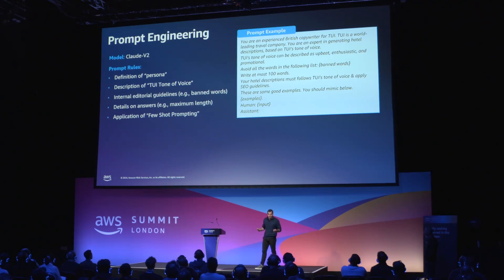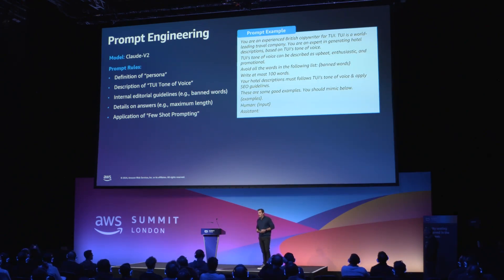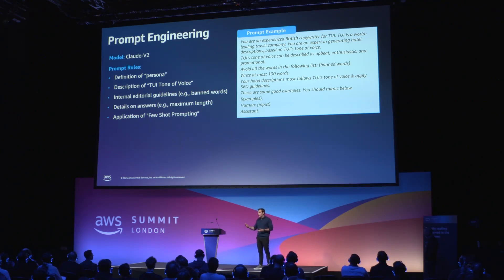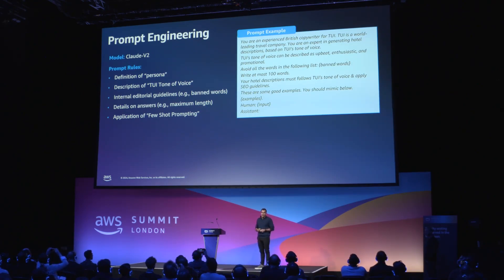Now the fun part — how we actually built it. If you have worked on an engineering AI project, the first couple of things you do are your model selection and prompt engineering. The model selection is a process that needs to be re-evaluated quite often, as the industry is extremely active and new models are coming out each and every week.